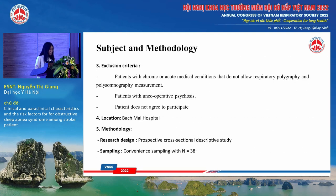Exclusion criteria include patients with chronic or acute medical conditions that do not allow respiratory polygraphy or polysomnography, patients with uncooperative psychosis, and patients who do not agree to participate. This research is conducted at Bach Mai Hospital, with a prospective cross-sectional descriptive methodology and convenience sampling of 38 patients.